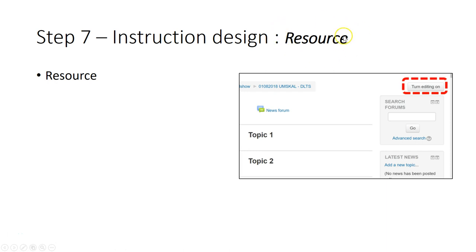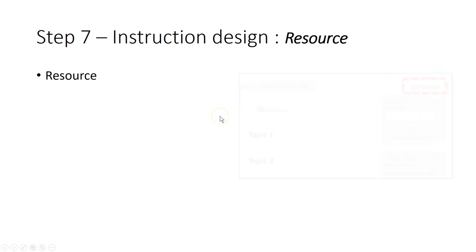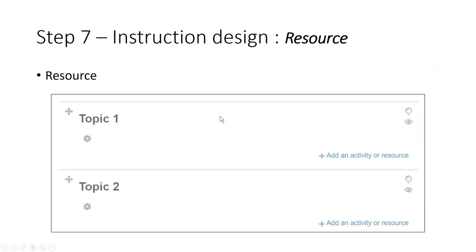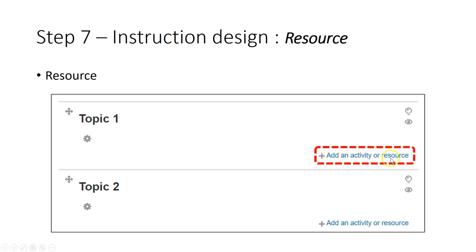The next step is to upload all the materials or link the materials to Smart UMS. First thing first, you have to turn editing on. After that, click on the 'Add an activity or resource' button.